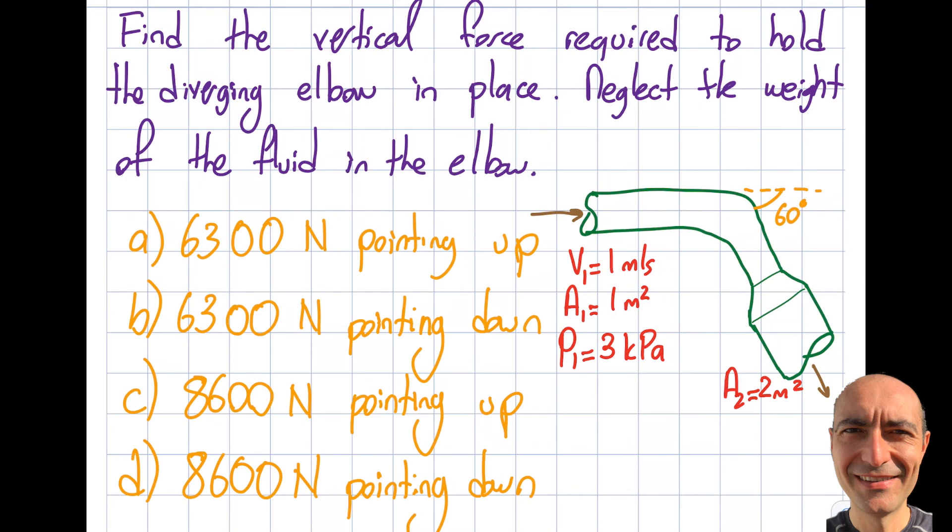Looking at what is given, I have v1, A1, and p1 for section one, but section two is missing some information we may need to refer back to. By the way, this is water.